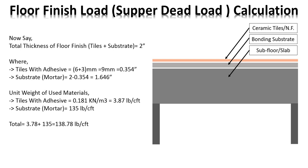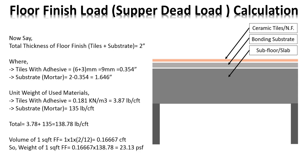The total unit weight on that value will be approximately 38.78. For the volume of 1 CFT floor finish: 1 foot × 1 foot × 2 inches divided by 12, giving a total of 0.1667 CFT. That is the total volume of our floor finish per square foot. Multiplying volume by unit weight gives a total weight of 23.13 PSF — so we say 25 PSF for a 2-inch floor finish.